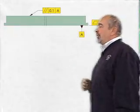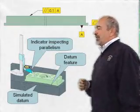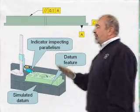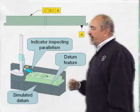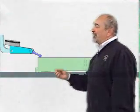Then I have a parallelism within point one to the plane established by A. So one way to check this would be to put the part down on the surface plate and run an indicator parallel to the plate.